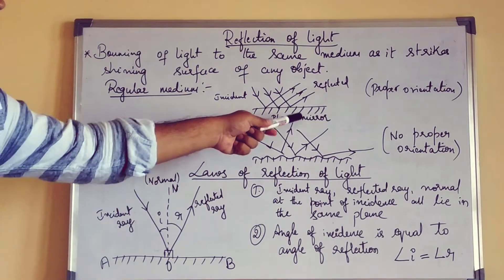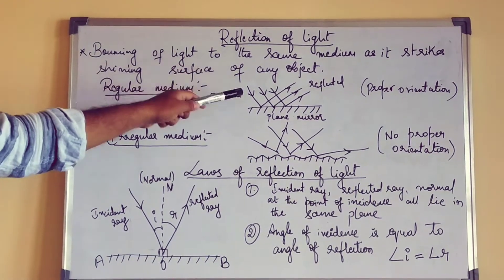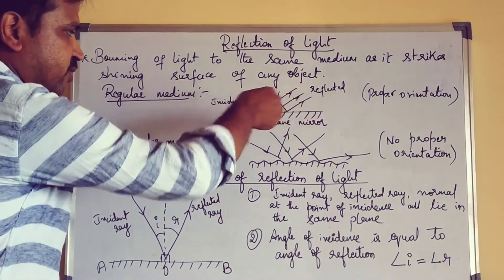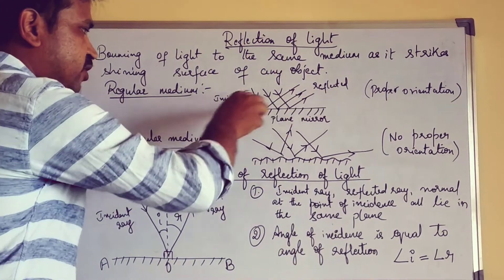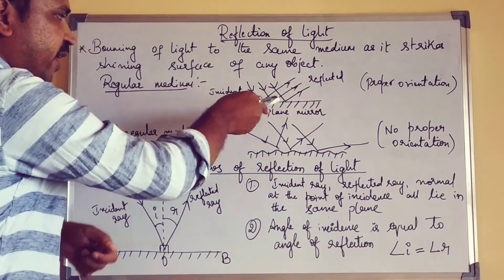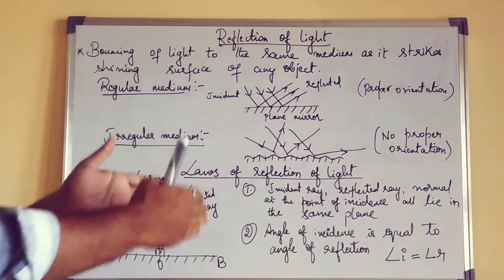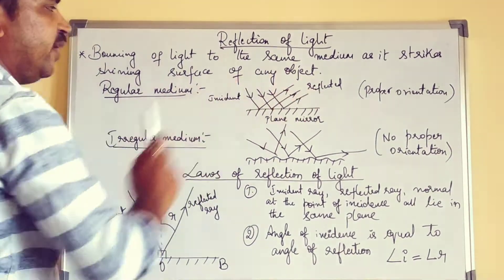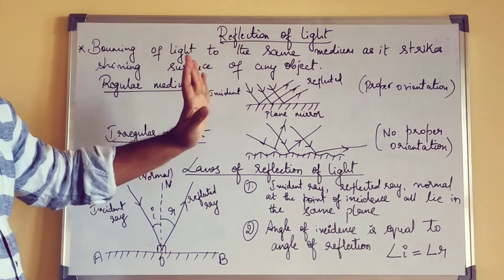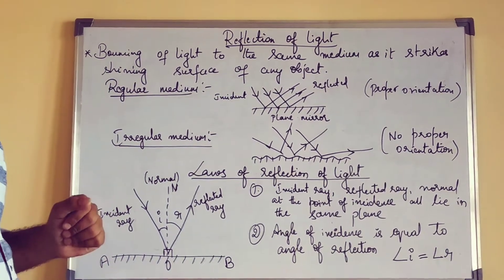For the regular medium I can give an example of a plane mirror — the mirror we use in homes. Whenever the light rays are incident on the surface of the plane mirror, you can see the protruded lines, which are the non-reflecting surface, above which we have a smooth shining reflecting surface. The incident rays — the rays falling on that shining surface — they have proper orientation, meaning they are aligned and parallel. The reflected rays are also properly aligned and parallel. So both incident and reflected rays are parallel, due to the property of this plane mirror, which is a regular medium.